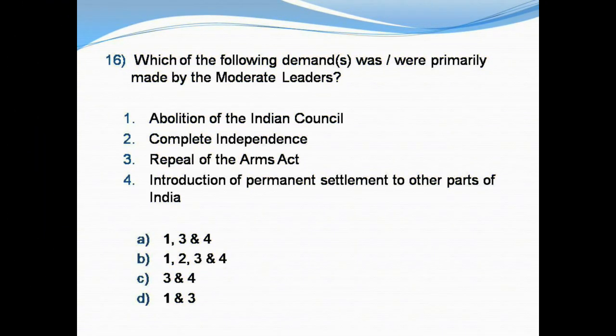Question number 16: Which of the following demands were primarily made by the moderate leaders? 1) Abolition of the Indian Council. 2) Complete independence. 3) Repeal of the Arms Act. 4) Introduction of permanent settlement to other parts of India. Options: A) One, three, and four. B) One, two, three, and four. C) Three and four. D) One and three.